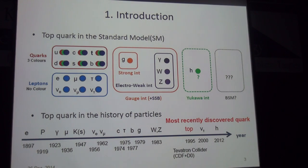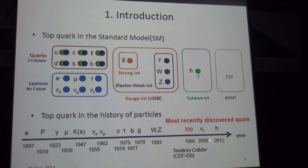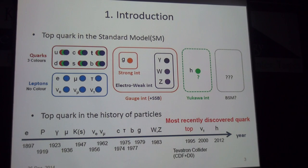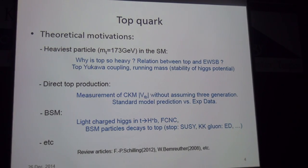Let me mention why we consider the top quark. Here is a table of discovered particles so far. The Higgs particle is the newest particle in the history of particle physics, but the top quark is the most recently discovered quark in the quark sector, so there is still room to discuss it. Focusing on the theoretical motivation, the top quark is the heaviest particle in the standard model.